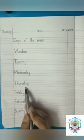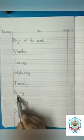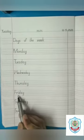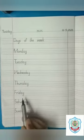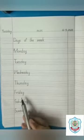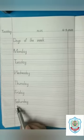The next one is Friday. F has a sound F. R has a sound R. I has its own sound I. D has a sound D. Y makes a sound A. Friday. The next one is Saturday.